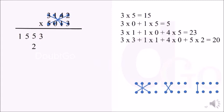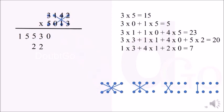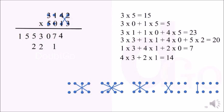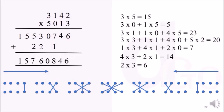Next we multiply 3 × 3, 1 × 1, 4 × 0, and 5 × 2 and add them to get 20. Then we multiply 4 × 3 and 2 × 0 to get 7, so we put 7. Then we multiply 4 × 3 and 2 × 1 and add them to get 14 — we put 4 and carry 1. Finally, we multiply 2 × 3 to get 6. That completes all 7 patterns. We followed our knitting pattern from right to left, but we could have followed it from left to right and still arrived at the same answer.